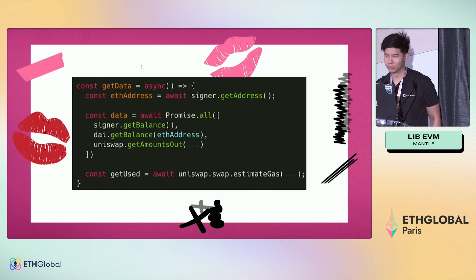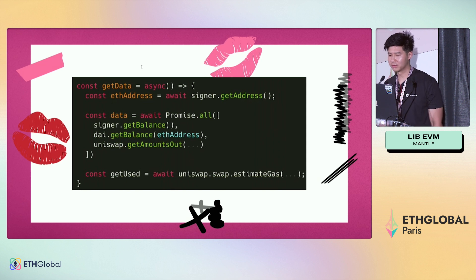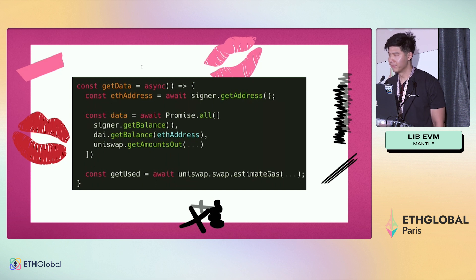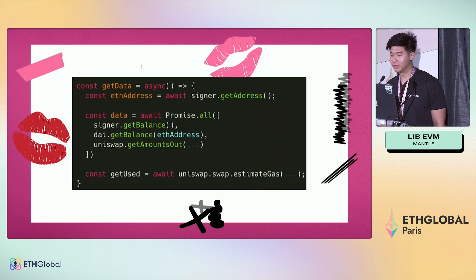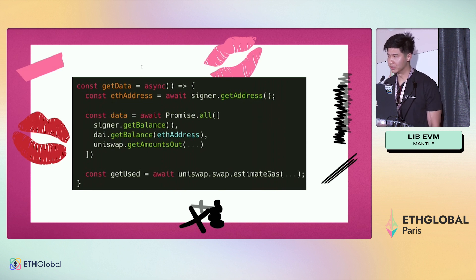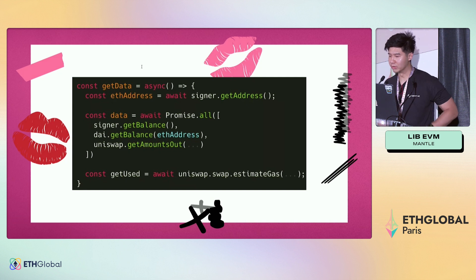A better approach is parallelizing all these queries into a Promise. You might call Promise.all and query all the promises at once. This is better, but you're still doing three parallel queries. And I'm here telling you that you can fetch any amount of data you want in one query.